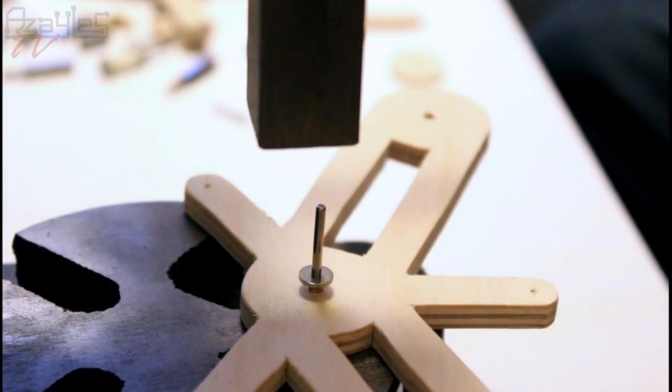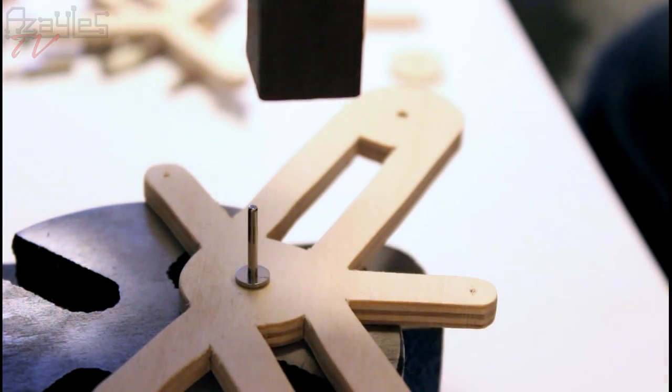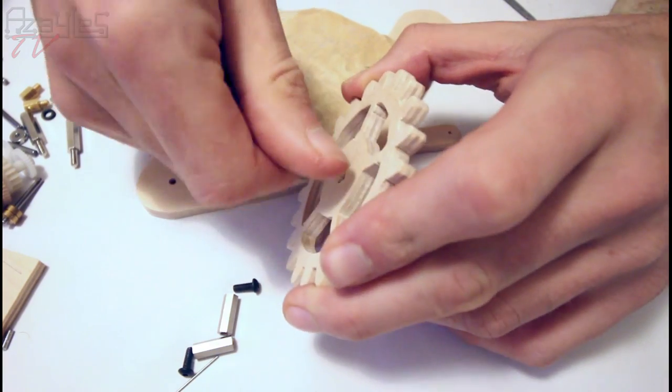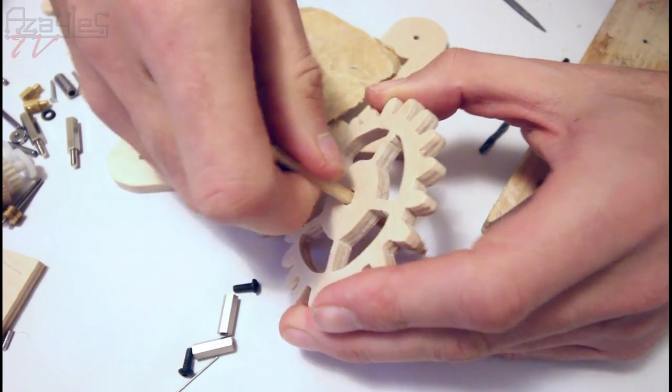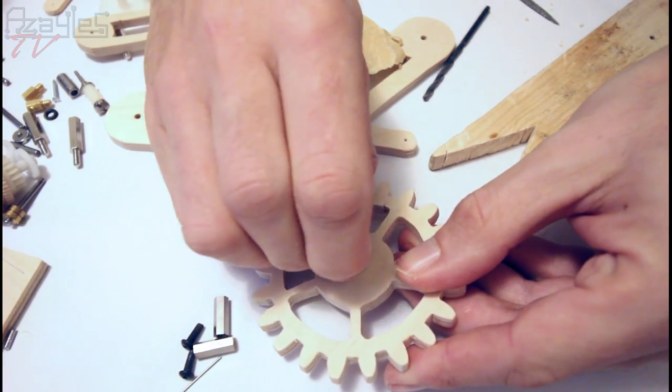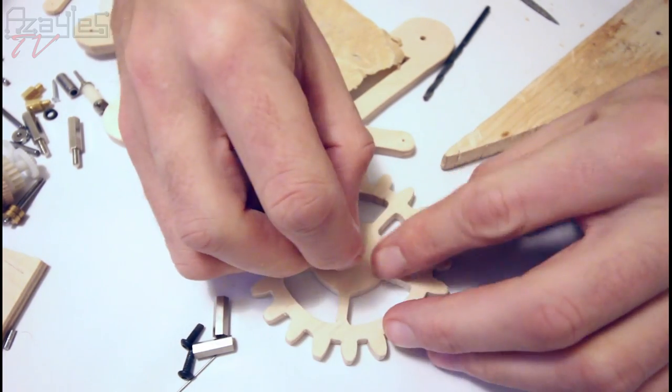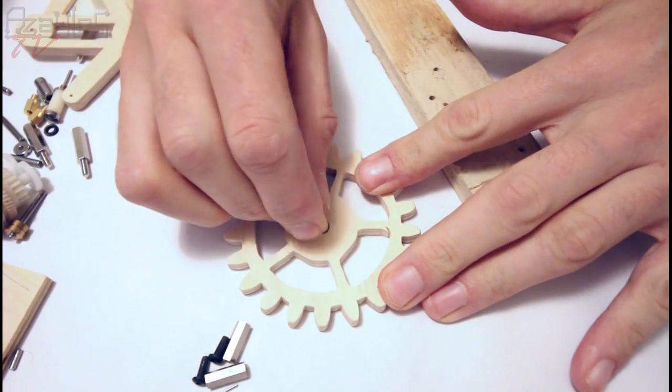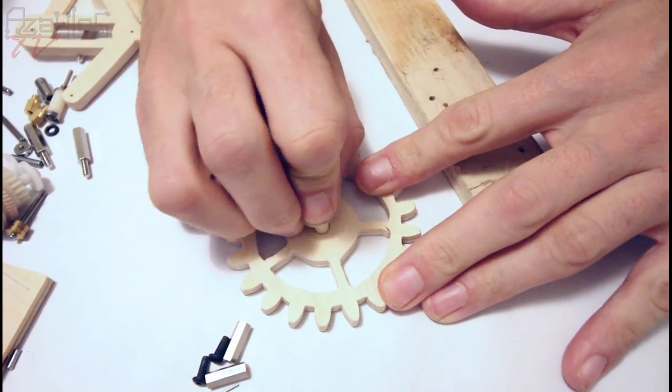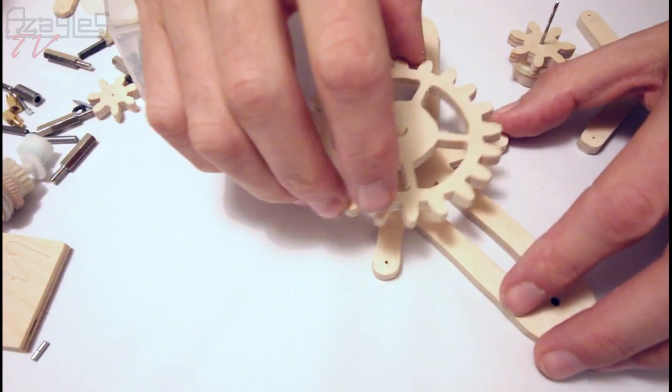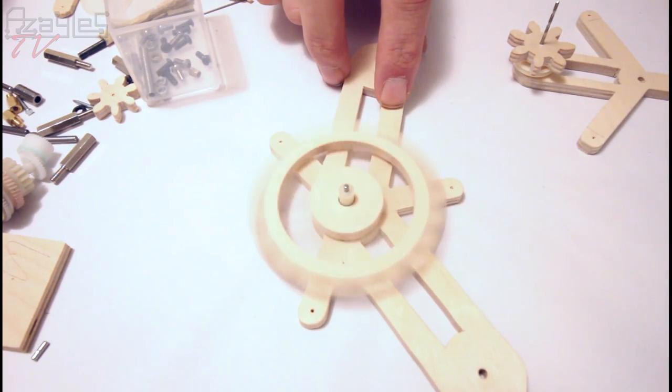And here we go. Drill this out, and now we need to ream it to size with sandpaper. So close it hurts. We're nearly there. This is pretty close now. I think I can push this in with the arbor press. It works. Check this out. Smooth. Excellent.